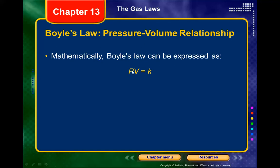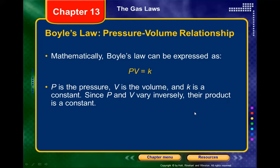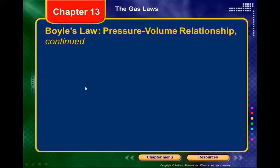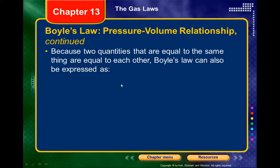Think of the constant as a number like 10. If pressure is 5, volume is 2. If volume goes up to 5, pressure must be 2; if volume goes up to 10, pressure drops to 1; if pressure goes up to 10, volume drops to 1. That's the mathematical relationship — their product is always constant.